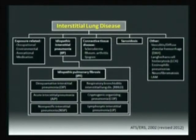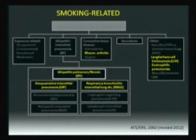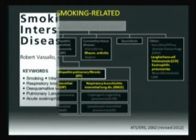Coming back to this classification — these are all smoking-related ILDs as far as we know: rheumatoid arthritis ILD, Langerhans cell histiocytosis, desquamative interstitial pneumonia, IPF, DIP, and RB-ILD. They are all smoking-related. That means that even in the field of ILD, smoking has a prevalent and prominent role.